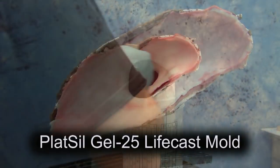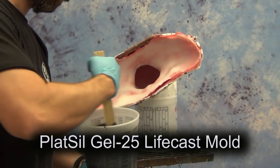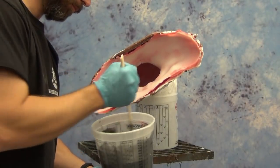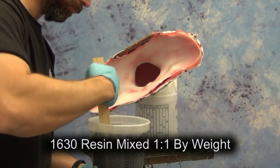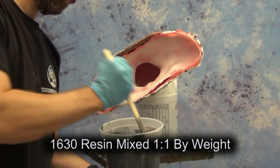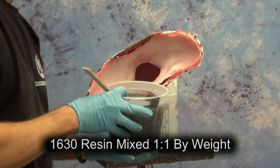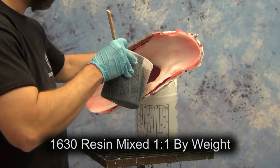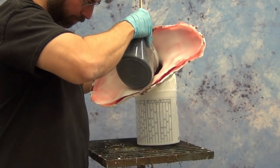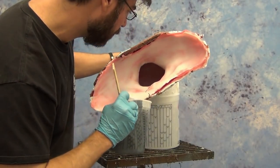In this case we have a PlatSil Gel-25 life cast mold, and I've set this up at an angle, a rakish tilt if you will. We're going to pour some 1630 resin into the mold just to pull a partial cast from the face. The reason we just want the partial cast here is we're going to do a prosthetic that's going to fit over our subject's eye.